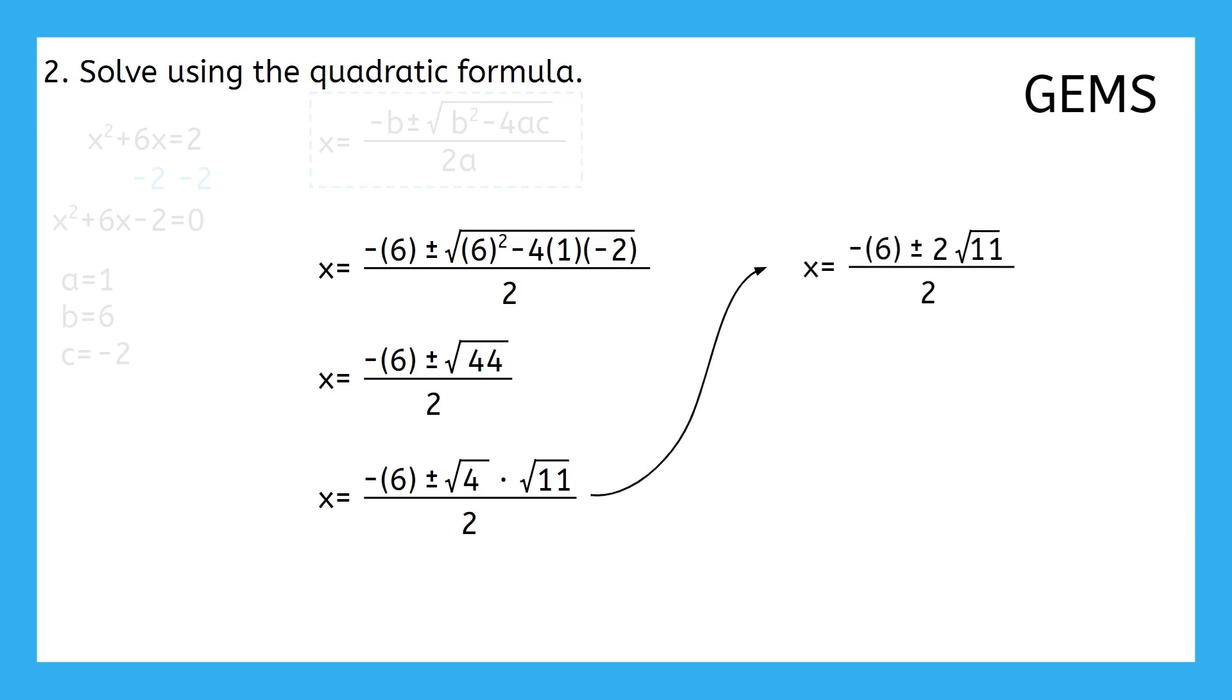From here, we can get rid of these parentheses around the 6, giving us negative 6, as now we've reached the last step of simplifying the numerator, subtraction and addition. Remember, that plus or minus symbol means we actually have two different equations here. x equals both negative 6 plus 2 times the square root of 11 over 2, and negative 6 minus 2 times the square root of 11 over 2.